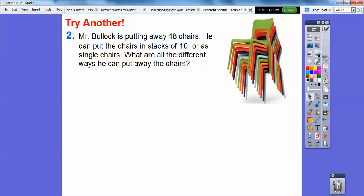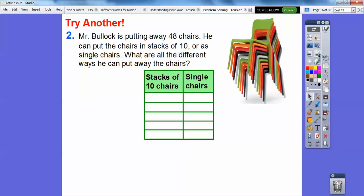Mr. Bullock is putting away 48 chairs. He can put the chairs in stacks of 10 or he can put them in single chairs. What are the different ways he can put all the chairs away? So we can stack them in stacks of 10 and then single chairs. So since we have 48, then we're going to start with stacks of 40, then 30, then 20, then 10s, then 1s. Remember, as this decreases by 1, it makes this increase by, you remember, increase by 10.